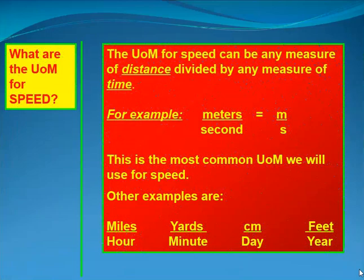The units of measure for speed can be any measure of distance divided by any measure of time. The most common one is meters per second, but there are others — miles per hour is one you're more familiar with. Yards per minute, centimeters per day, feet per year are all valid units of measure for speed.